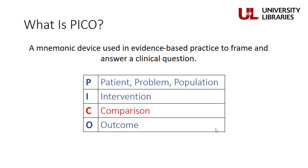It should be noted that not all research questions have a comparison. So while you should always have a patient, problem, or population (P), and an intervention (I), and have a hypothetical outcome (O) in mind, you might not always have a comparison. You might have also learned about PICO with a T at the end for time. While you may have a time frame in mind for your own research project, it is rarely useful to search for a time frame in a research database.